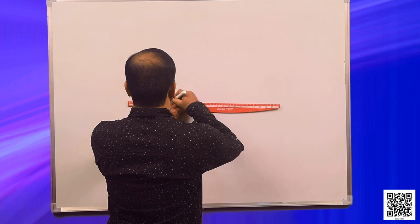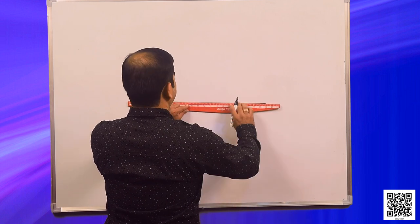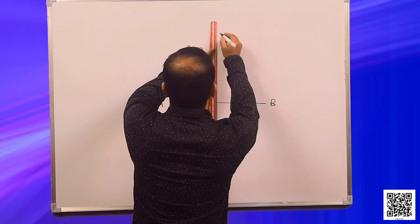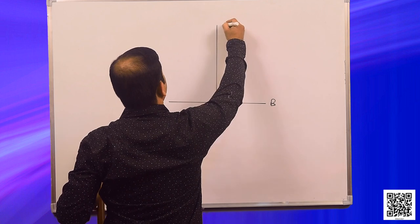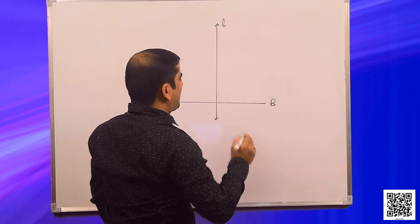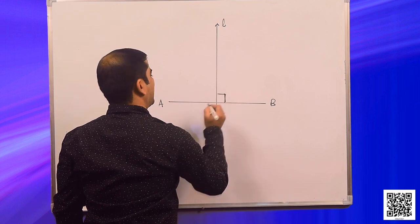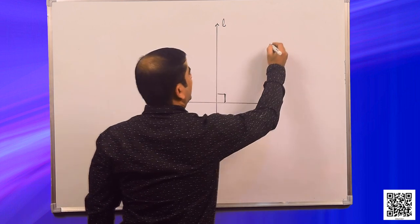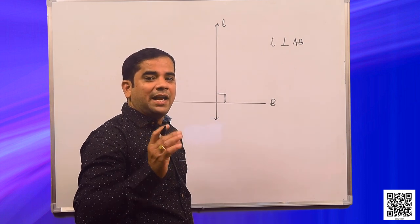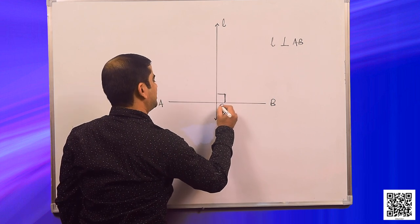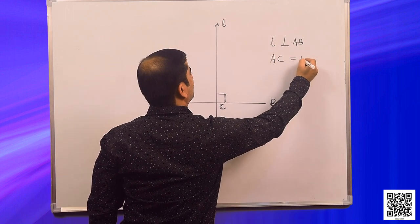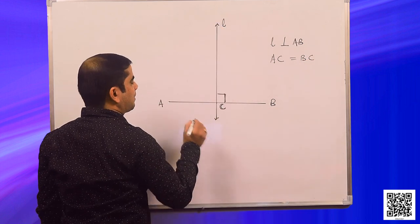As per the question, AB is a line segment and line L bisects it. This is your line L and this is the line segment AB. L is the perpendicular bisector, that means the angle is 90 degrees. So L is perpendicular to AB. The question also says that L meets line segment AB at point C.